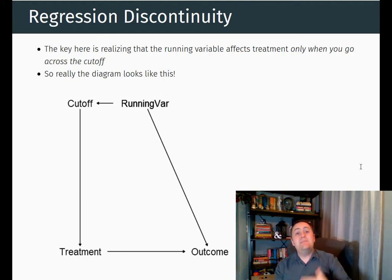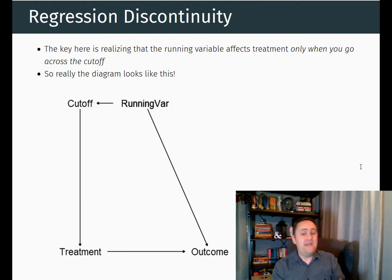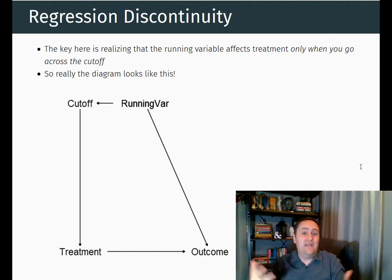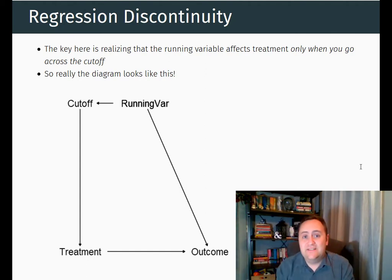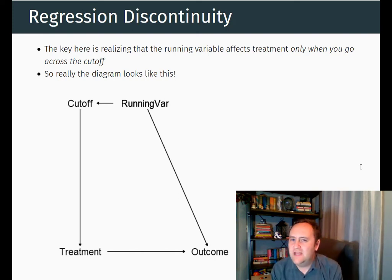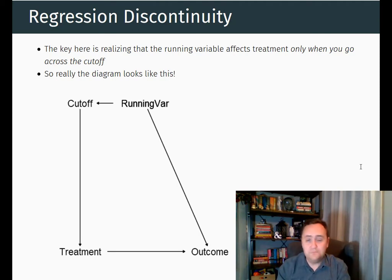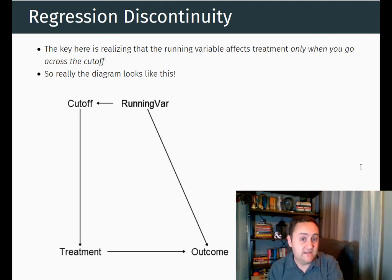And so we might make the claim that it's basically random around the cutoff — that the assignment to treatment is random around the cutoff, and that it's not going to be related to anything else that might be on back doors. Because this isn't really what the diagram looks like — we really have lots of other things on back doors.